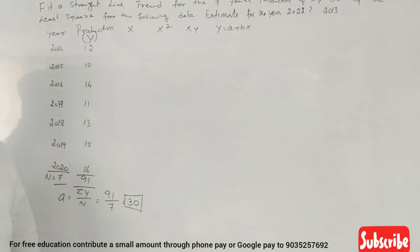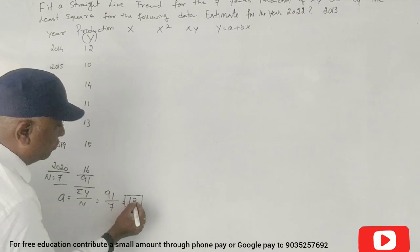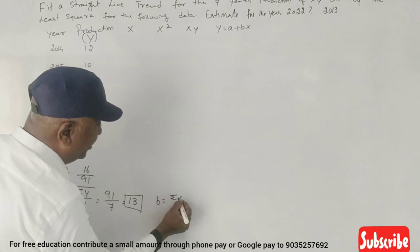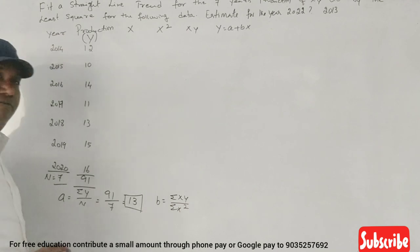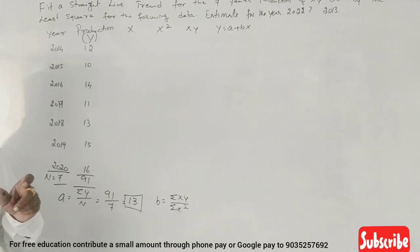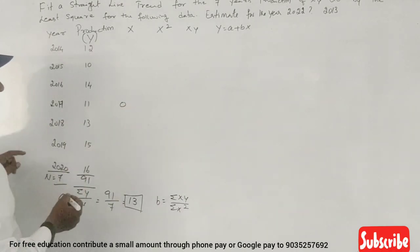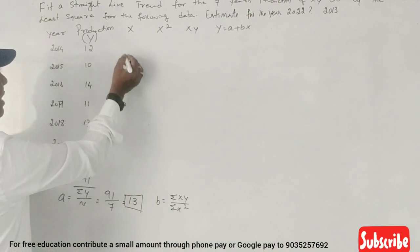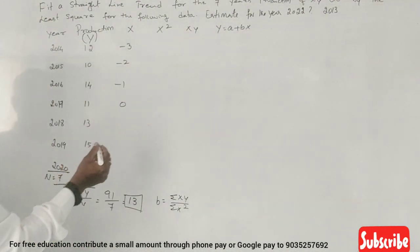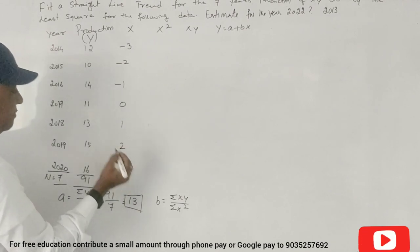Y value is equal to 13. B is equal to summation XY divided by summation X squared. Now, X values - since we have 7 years, even number, 2017 is equal to 0. So minus 3, minus 2, minus 1, then plus 1, plus 2, plus 3. Clear?